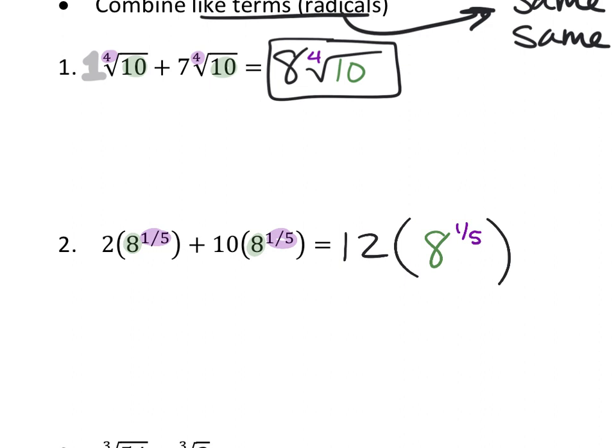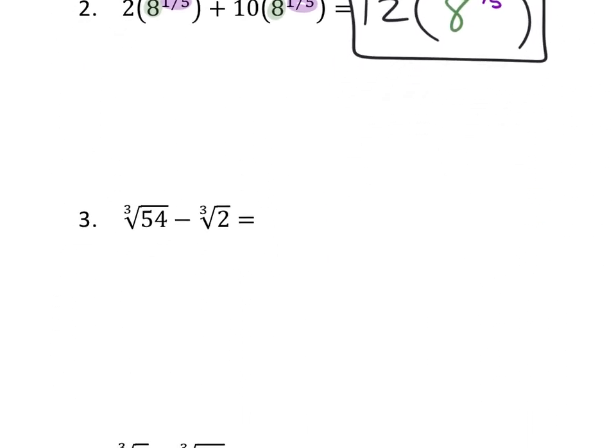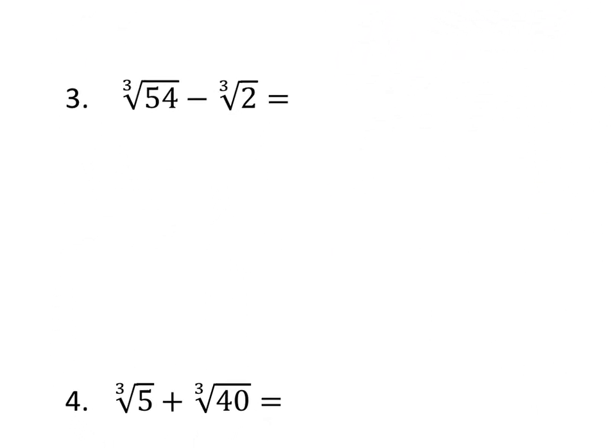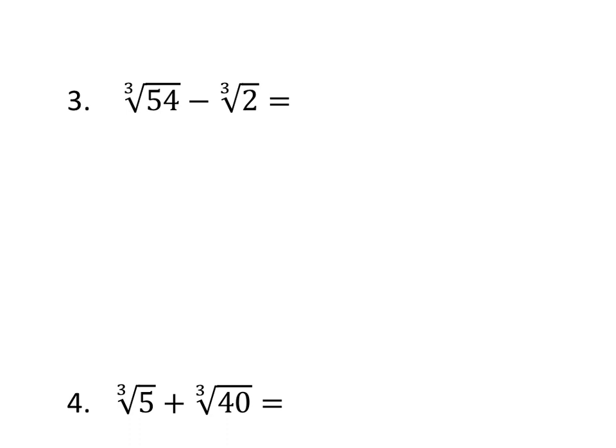What happens when they're not alike? In example three, we notice they have the same index, but do they have the same radicand? No — so that's a problem. We have to use our other skills to try to make them have the same radicand. Can you break down two? No. So our goal is to get them to match with a two inside. Can we break down 54? Yes.